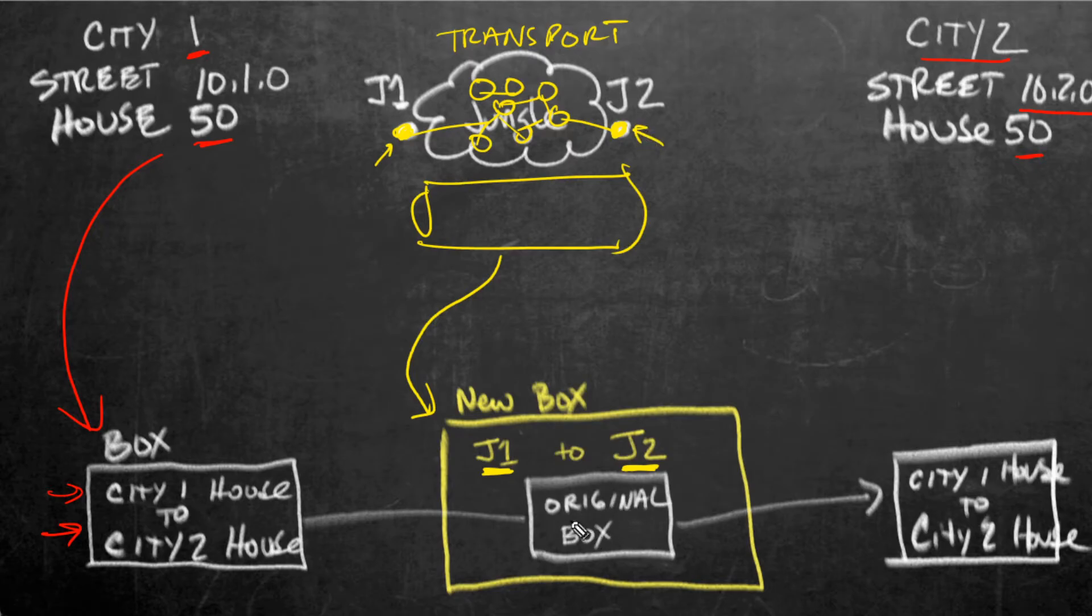So the original message is inside the smaller box. And the outside box with the new label is just for that jungle transport. And then someone would have to pick up that package from jungle point two, open it up and say, oh, here's the original information. It's coming from this house over here on the left, going to this house on the right. It would throw away the old box because it no longer needs the jungle transport going from left to right. And it would then continue to have that package forwarded until it hit the correct house at city two.